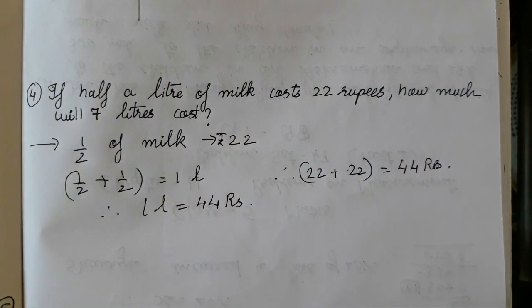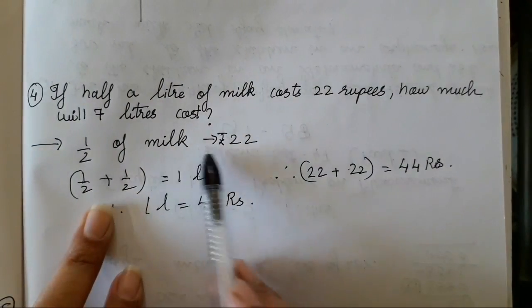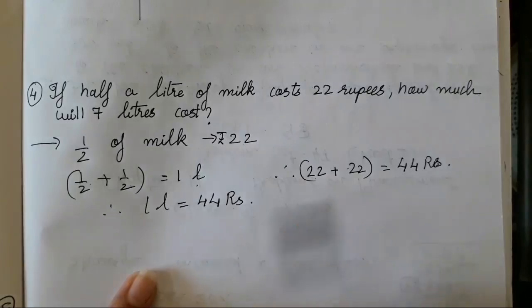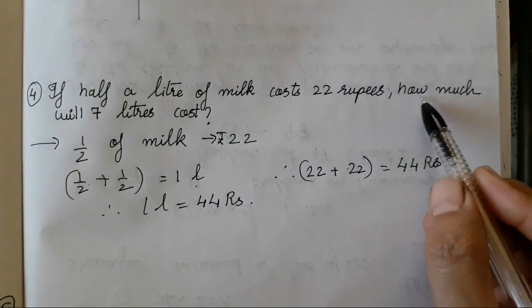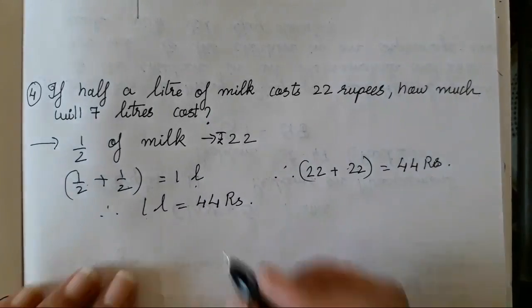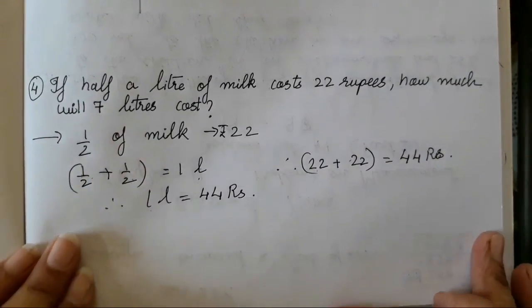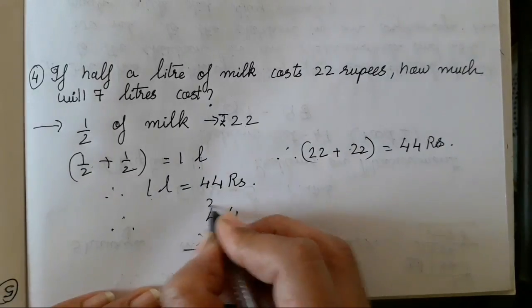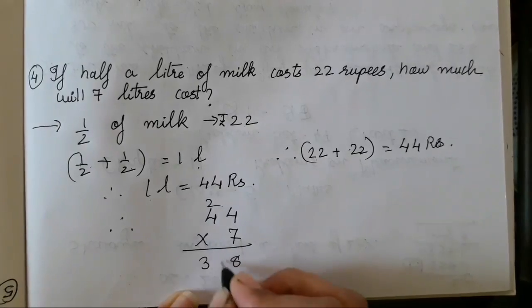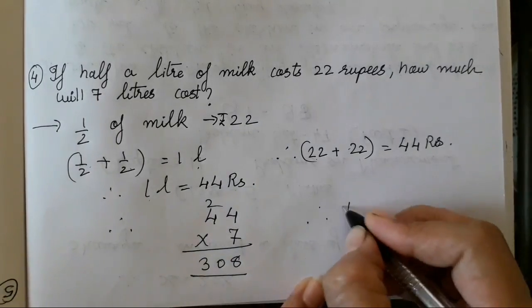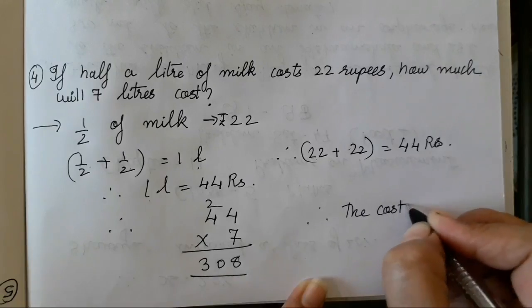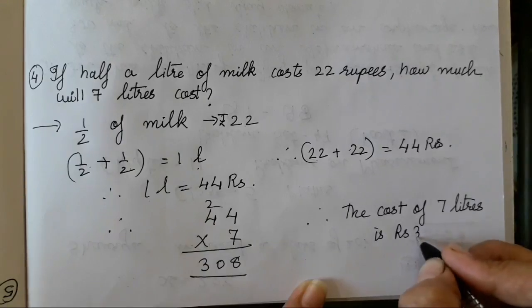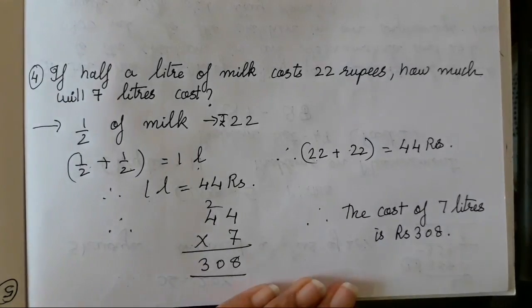Now we have to find the cost of 7 litres. Therefore, 44 multiplied by 7: 4 sevens are 28, write 8 carry 2; 4 sevens are 28, plus 2 is 30. Therefore, the cost of 7 litres is rupees 308.